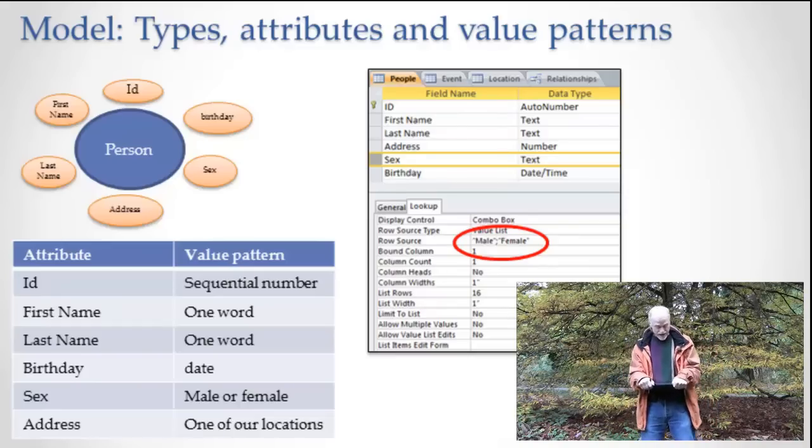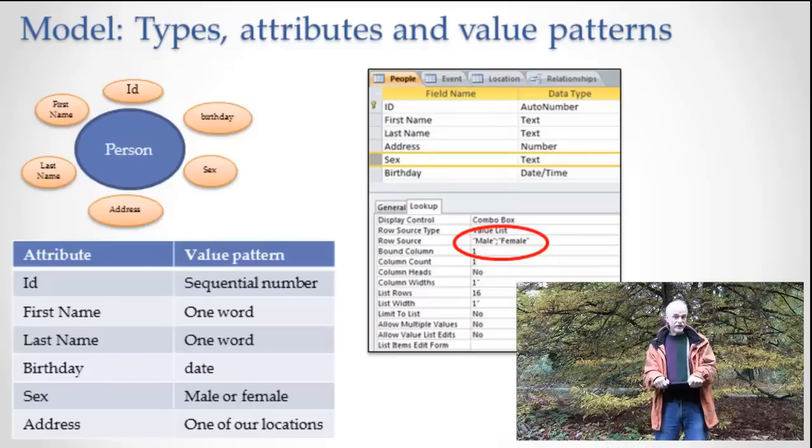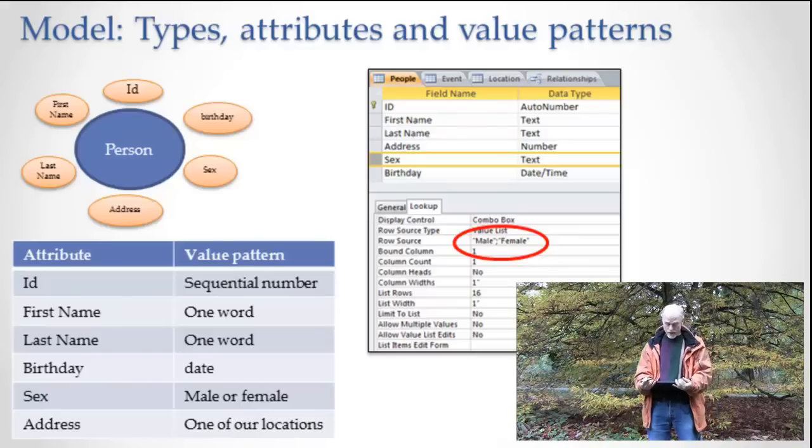We said that they have a birthday and it's a date. We said that they have a sex, and sex can be either male or female. Okay, now, that's the stuff that we've been over before. Now, let's look at how exactly the same stuff looks inside of a database. We have a person table, or in this case, it's called the people table.